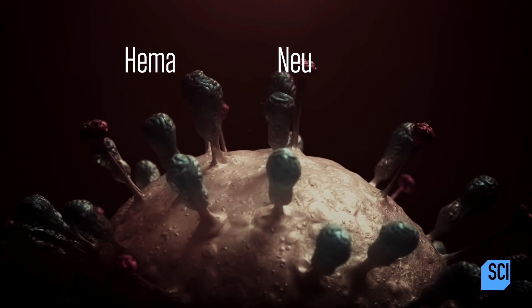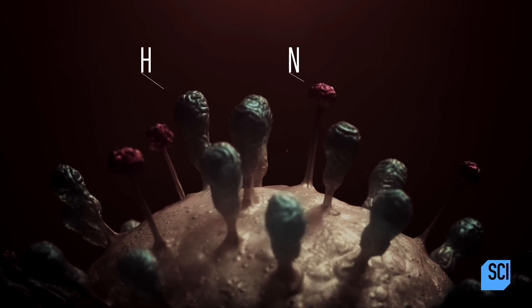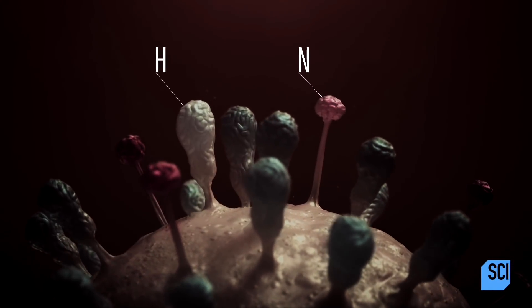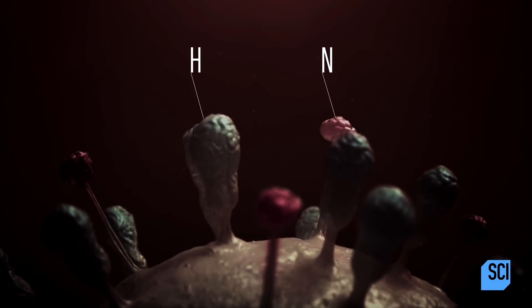There are different subtypes of influenza, and they're named by the two surface proteins, hemagglutinin and neuraminidase. We tend to shorten that to just H and N. Each of those proteins has its own variants.